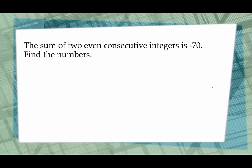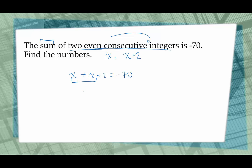The sum of two consecutive even integers is negative 70. We're adding two consecutive even integers, so I call the first integer x and the next even integer would be x plus 2. The equation is x plus (x plus 2) equals negative 70. x plus x is 2x, subtract 2 from both sides, giving me negative 72. Divide both sides by 2 and I get x equals negative 36.